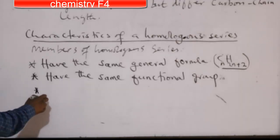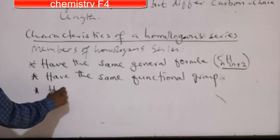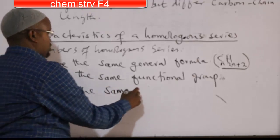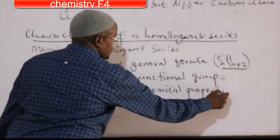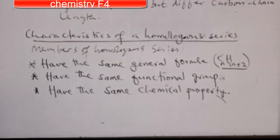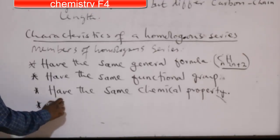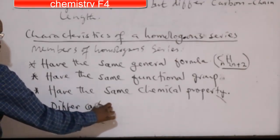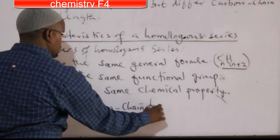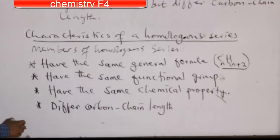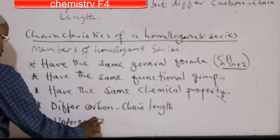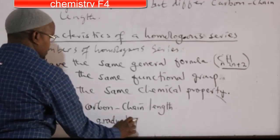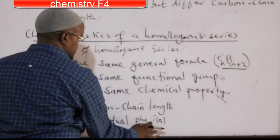Number three: members of a homologous series must have the same chemical properties. And point number five: they undergo gradual physical properties — physical properties change gradually along the series.